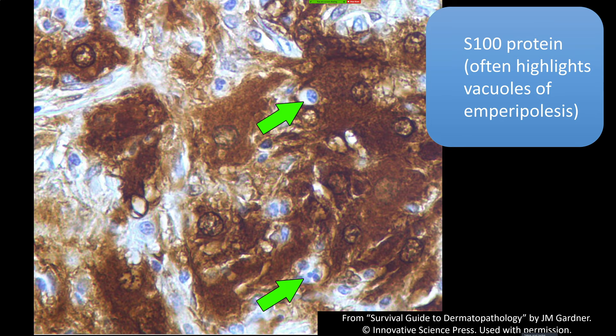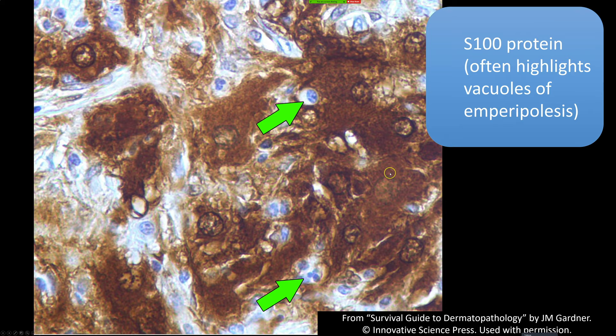S100 is going to be positive in Rosai-Dorfman disease — the histiocytes are usually strongly S100 positive in both their nucleus and cytoplasm. S100 will also help highlight the vacuoles where emperipolesis is present, because it shows the little empty space and that the white blood cells are sitting in that space. That can be helpful to do sometimes.